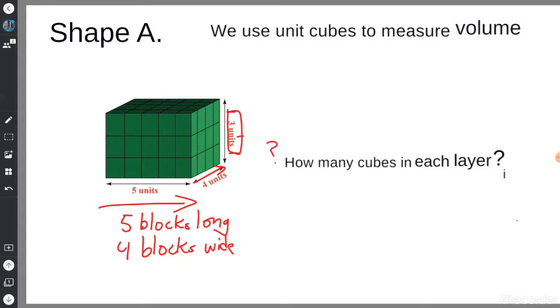I could see that there is one, two, three, four, five, six, seven, eight, nine, ten, eleven, twelve, thirteen, fourteen, fifteen, sixteen, seventeen, eighteen, nineteen, twenty blocks in the top layer. That means there are 20 blocks in each layer.